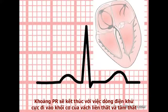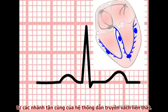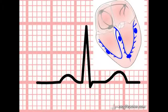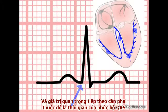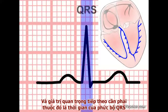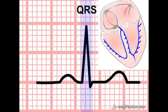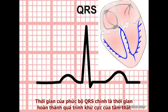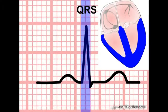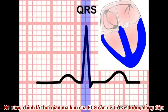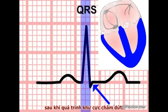The PR interval ends with the release of current into the main muscle mass of the septum and ventricles from the terminal branches of the intraventricular conducting system. On the ECG, this point is marked by the onset of the QRS complex. The duration of the QRS complex represents the time taken for ventricular depolarization to be completed following the release of depolarizing current from the conducting system. It also includes the time taken for the recording needle to return to baseline when the flow of depolarizing current in the ventricles has ceased.